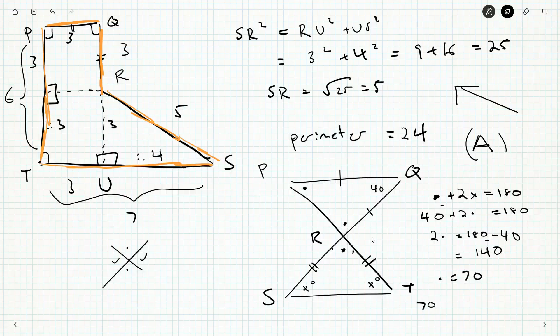So 70 plus two x's is 180. That means two x's is 110. Divide by two, x is 55. There we go.